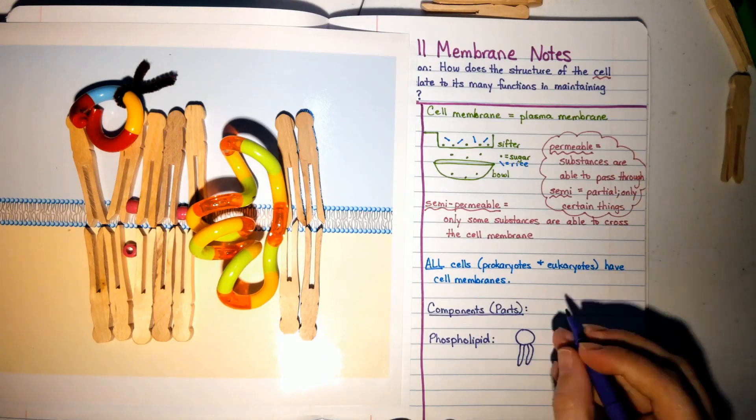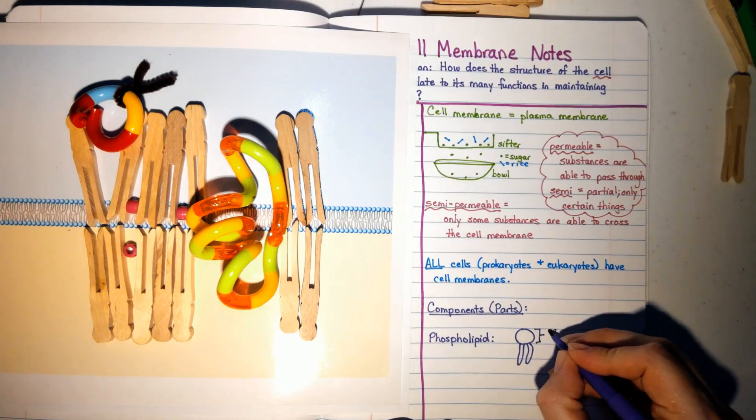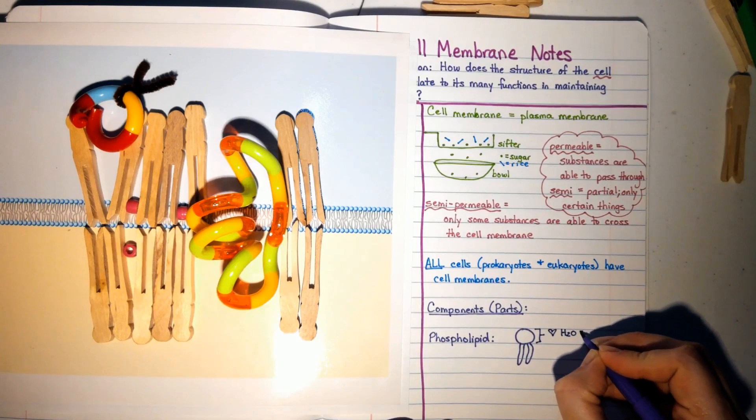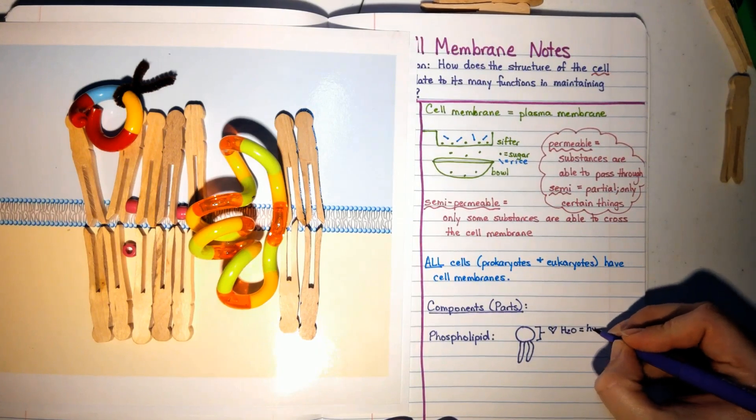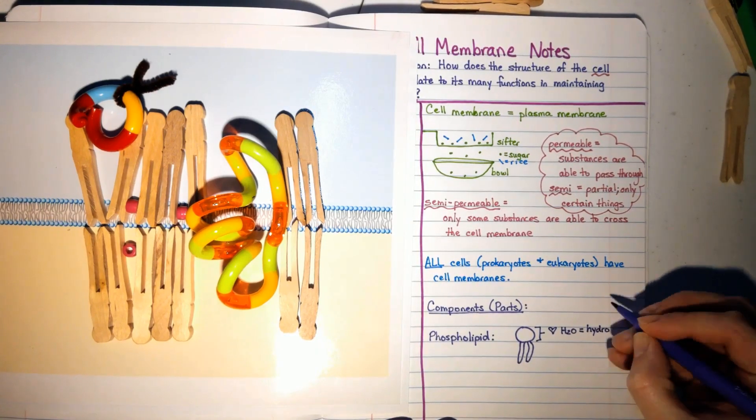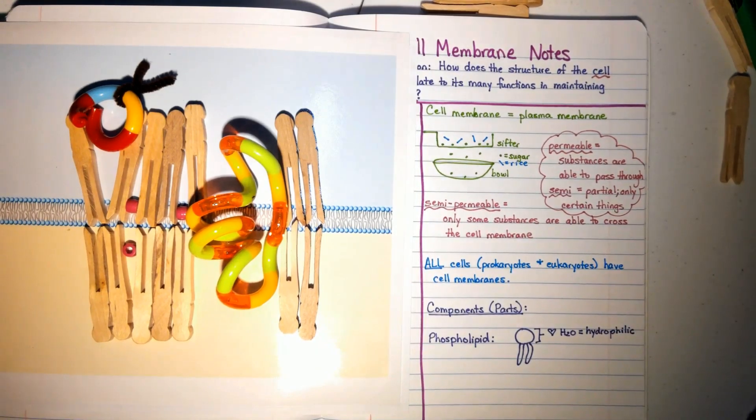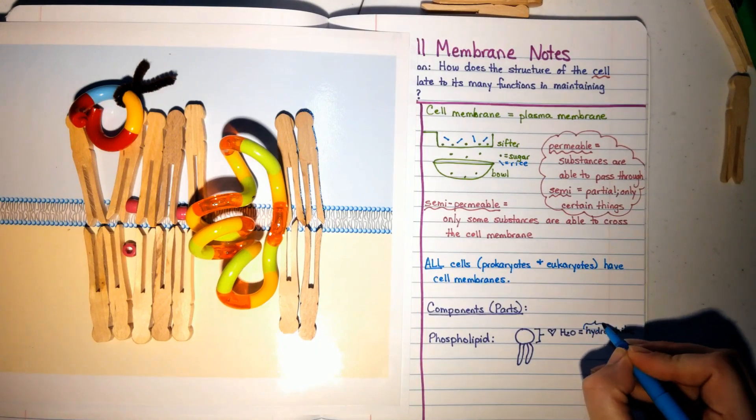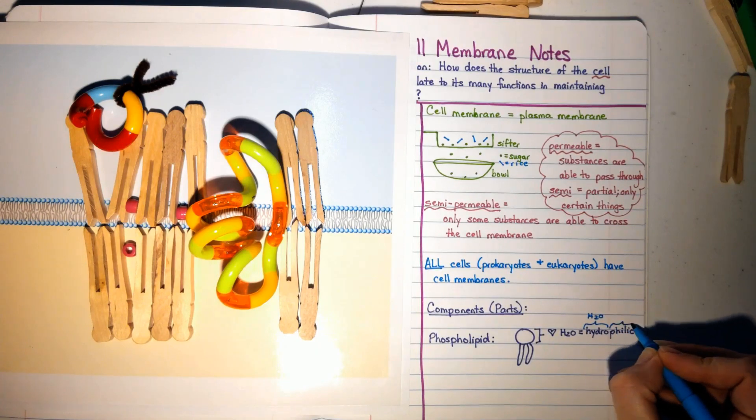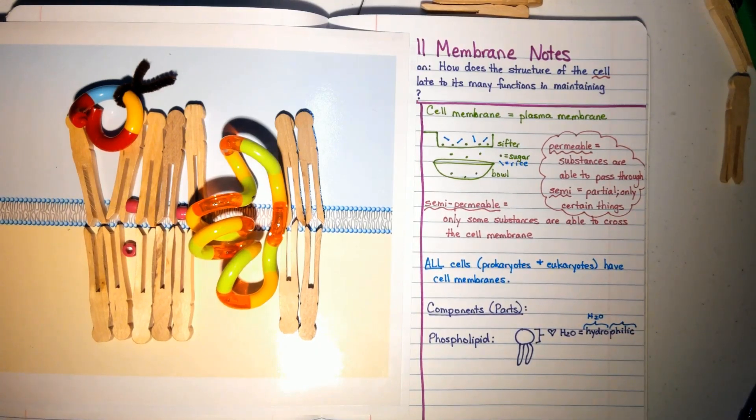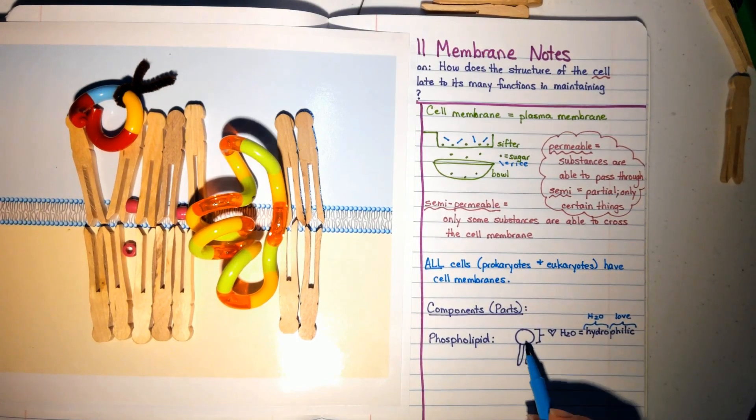The little head part loves water. The way in science that we say loves water is hydrophilic. Hydrophilic—hydro means water, and philic comes from the Greek word philia which means to love. That means that these heads will always be hanging out near water.